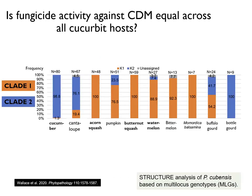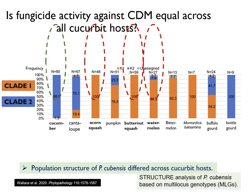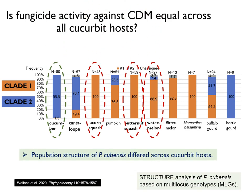Here we show the breakdown of the two P. cubensis clades based on cucurbit host. The coloration in each bar represents the proportion of isolates classified to each clade. Specifically note how the P. cubensis populations on cucumber differ from other cucurbit crops like acorn squash, butternut squash, and watermelon. This is clear evidence that P. cubensis populations vary across different cucurbit hosts.